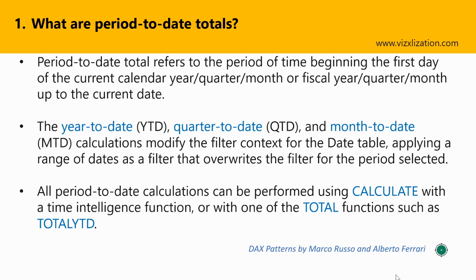So what are period-to-date totals? A period-to-date total refers to the period of time beginning the first day of the current calendar year, quarter, or month — or it can also be a fiscal year, quarter, or month — up to the current date. The year-to-date, quarter-to-date, and month-to-date calculations modify the filter context for the date table, applying a range of dates as a filter that overwrites the filter for the period selected. All period-to-date calculations can be performed using CALCULATE with a time intelligence function, or with one of the total functions such as TOTALYTD.